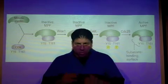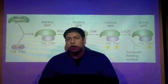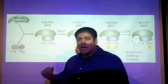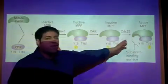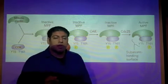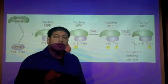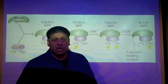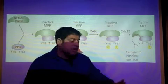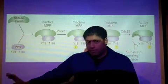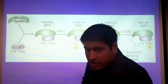Now that you understand, or if you need to replay it, replay it, but understand the major players here: the Wee1 kinase and the CDC25 phosphatase. Those are the main ones I want you to remember just now, because now we're going to look at how those recessive mutations and dominant mutations occur, and it's because of the CDC25 and the Wee1.